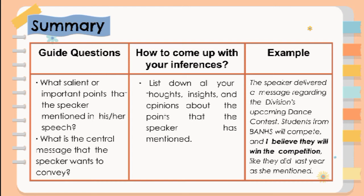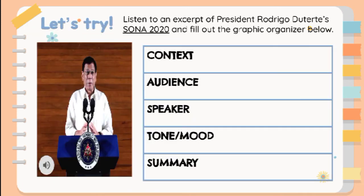You have developed your ability to cite text evidence in the previous quarter, and now you are working on another important skill: making simple inferences. You may not realize it, but you have been employing this skill in your daily activities. All you have to do now is put it into practice while reading or listening. When inferring from the text, integrate your prior knowledge or personal experiences with the evidence provided by that text. Now, let's try.